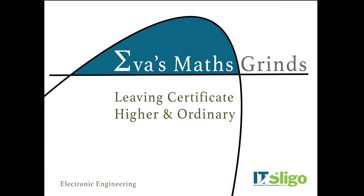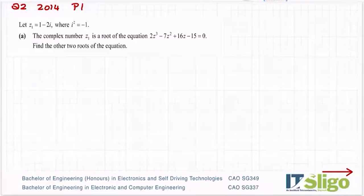Hi, I'm Eva Murphy from Electronic Engineering at IT Sligo and this is my Leave It Insert Maths Grinds channel. I'll regularly add new videos for both higher and ordinary level maths, so make sure you subscribe below and click the bell icon to be notified of new videos. Right, question 2, 2014: let z1 equal 1 minus 2i, where i squared is equal to minus 1.